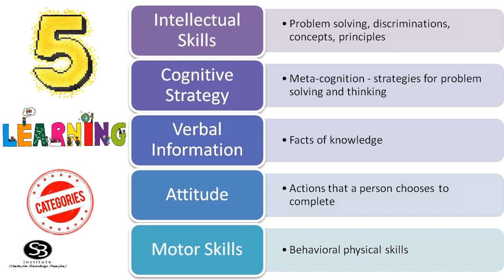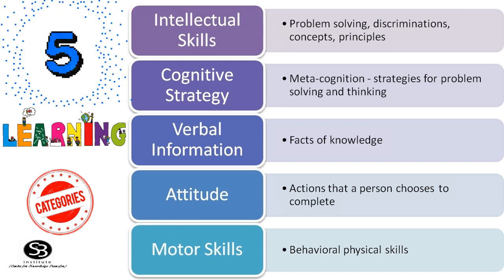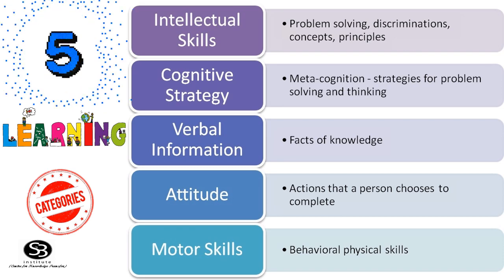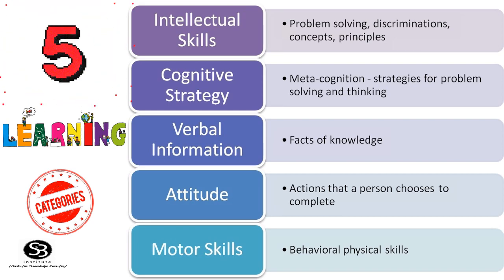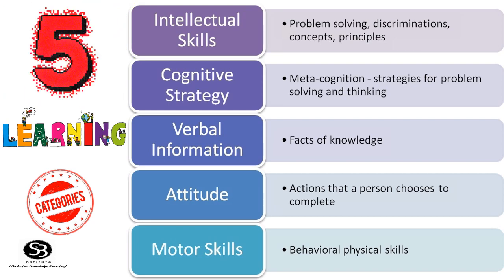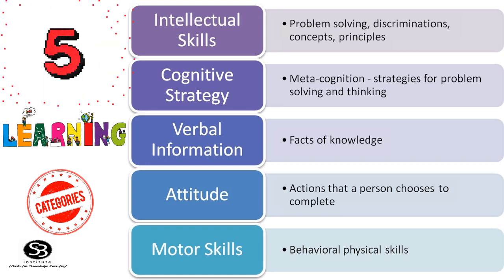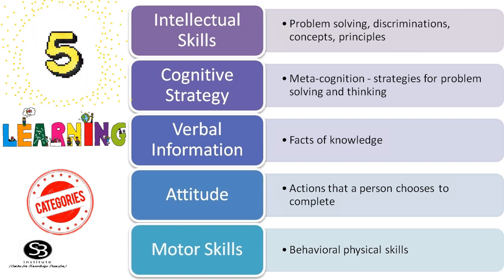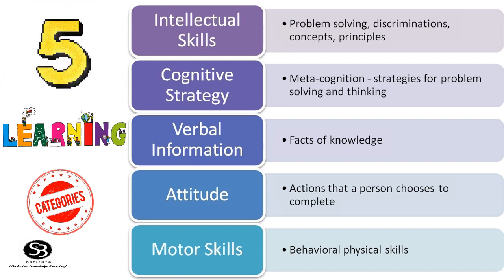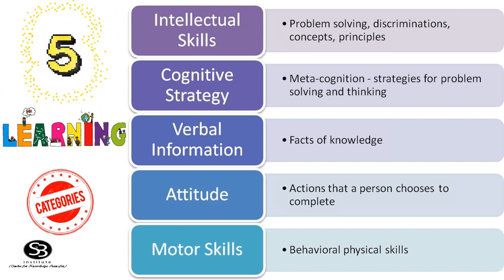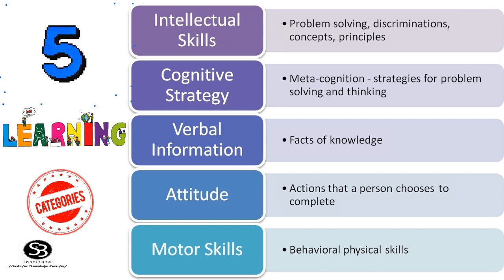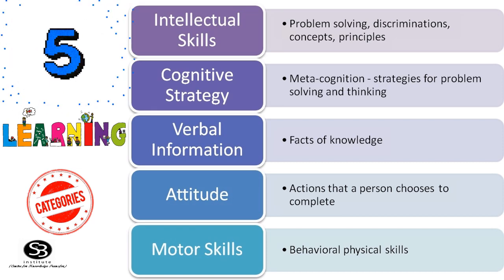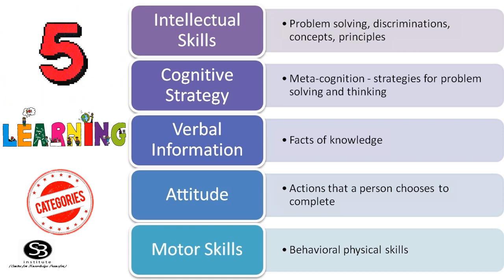In the 5 Categories of Learning, Gagné discussed five essential skills required for learning. They are: Intellectual Skills — including Problem Solving, Discrimination, Concept, and Principle; Cognitive Strategy — that is, metacognition and strategies for problem solving and thinking; Verbal Information — packs of knowledge; Attitude — the action that a person chooses to complete; and finally, Motor Skills — behavioral and physical skills.